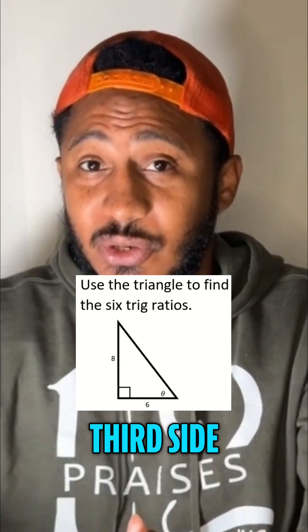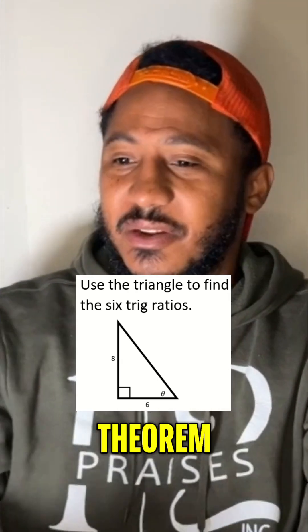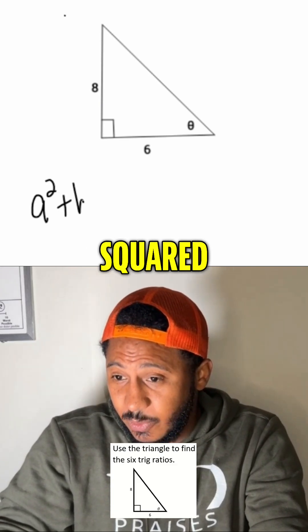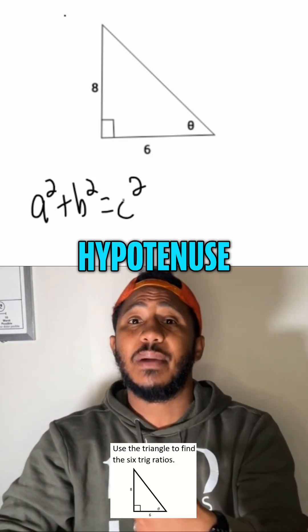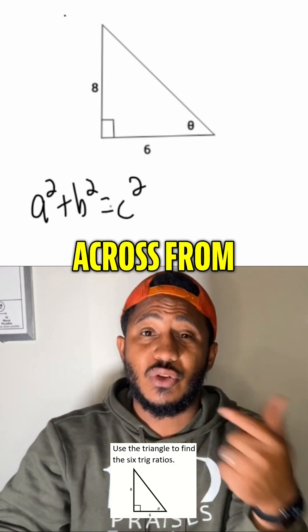Well, if we're given two sides, finding the third side, if it's a right triangle, you can use Pythagorean theorem, which is A squared plus B squared equals C squared, where C is the hypotenuse. So, again, the side across from the right angle.